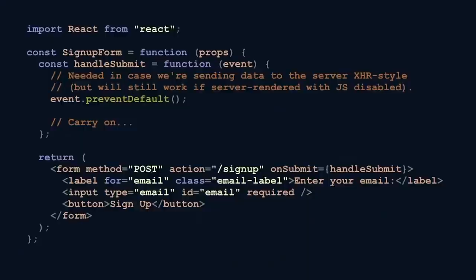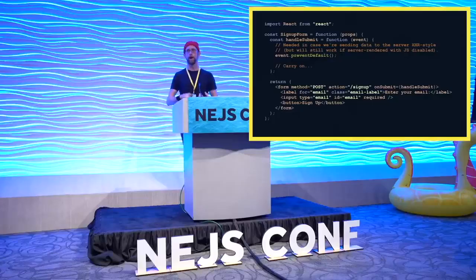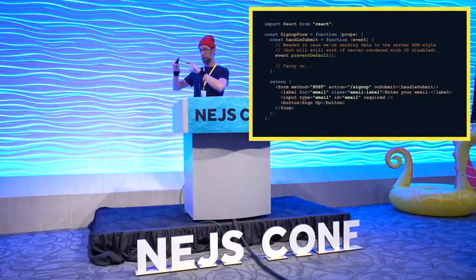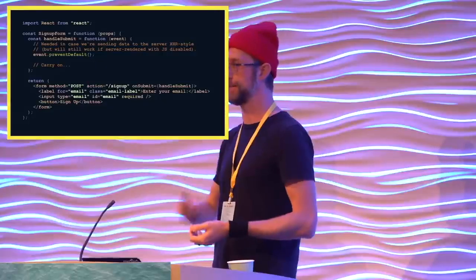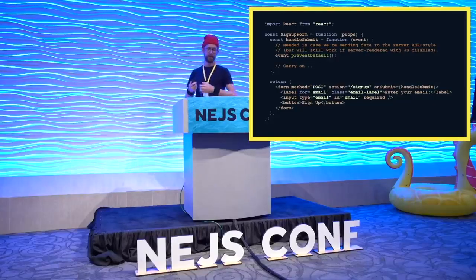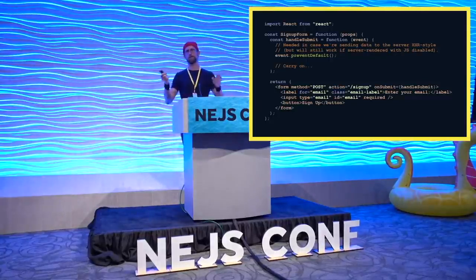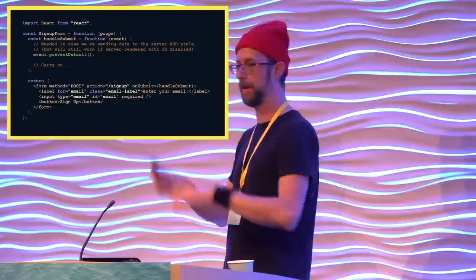Here's the refactored markup with all of that advice applied, where every part now has semantic meaning that assistive technologies can use. Assuming the component is server rendered, it will also continue to work if the scripts fail to run. The submit event handler has moved from the button's onclick event to the form's onsubmit event. Additionally, because email validation is now handled through HTML — using an email input type with a required attribute — we can remove the email validation script entirely.